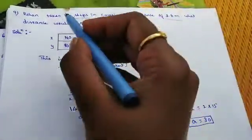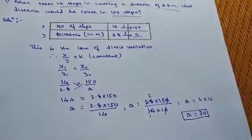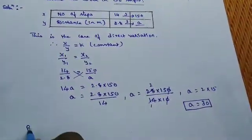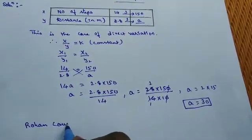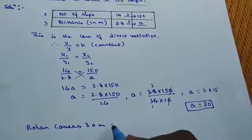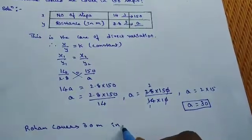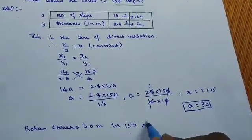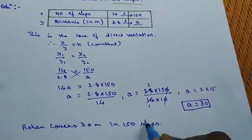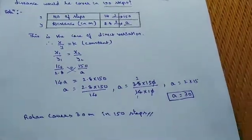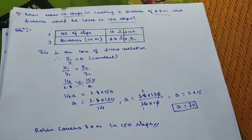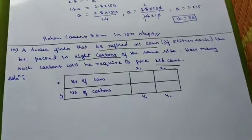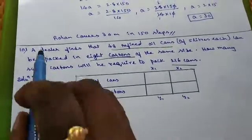So he covers 30 steps. Then give the conclusion step. That is what distance would he cover. Then you should write. So Rohan covers 30 meters in 150 steps. This is how you need to find the solution for the question children. Same thing you need to take down in the class work. So moving to 10th question children.